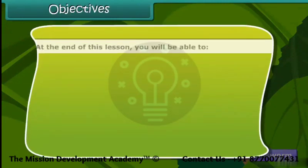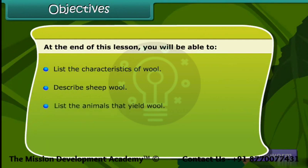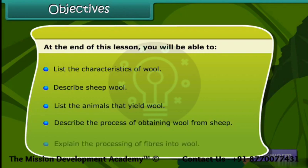At the end of this lesson, you will be able to list the characteristics of wool, describe sheep wool, list the animals that yield wool, describe the process of obtaining wool from sheep, and explain the processing of fibers into wool.